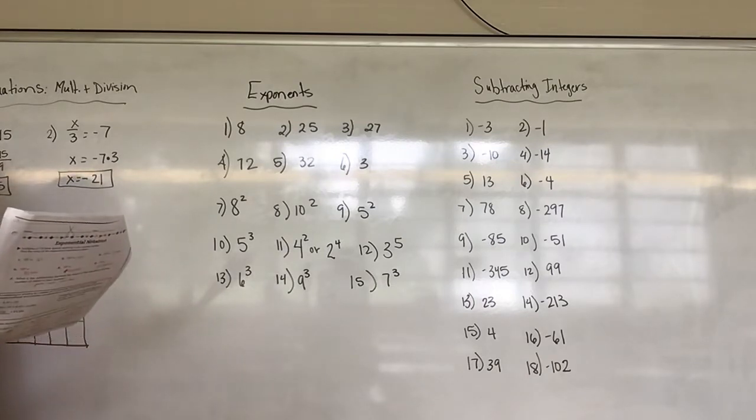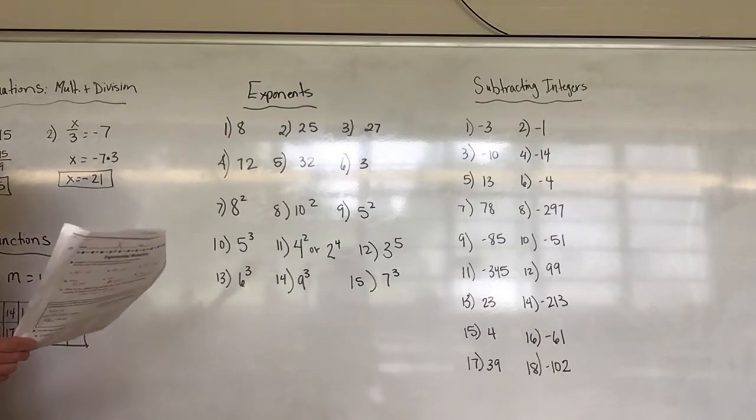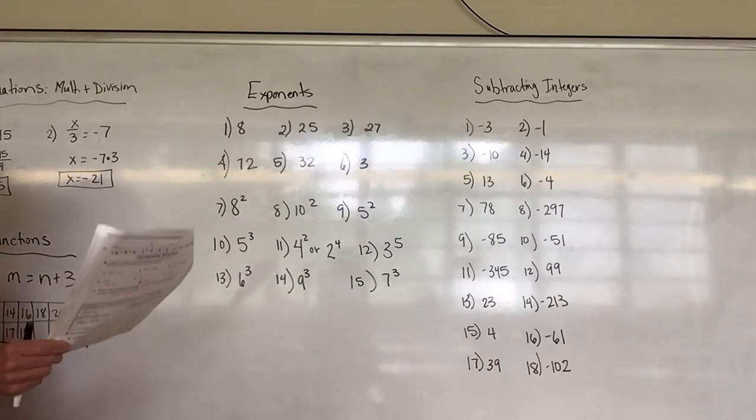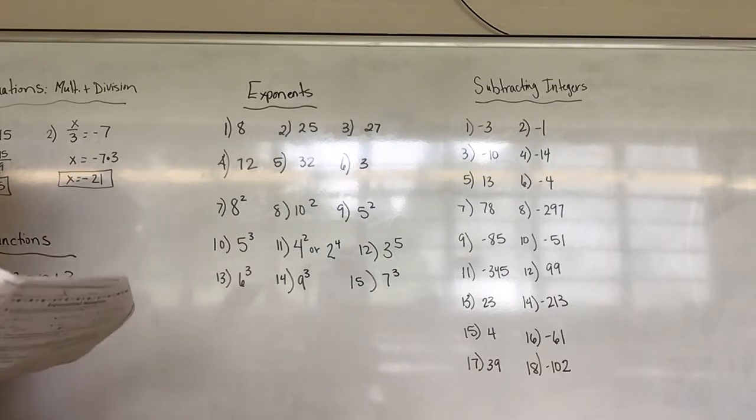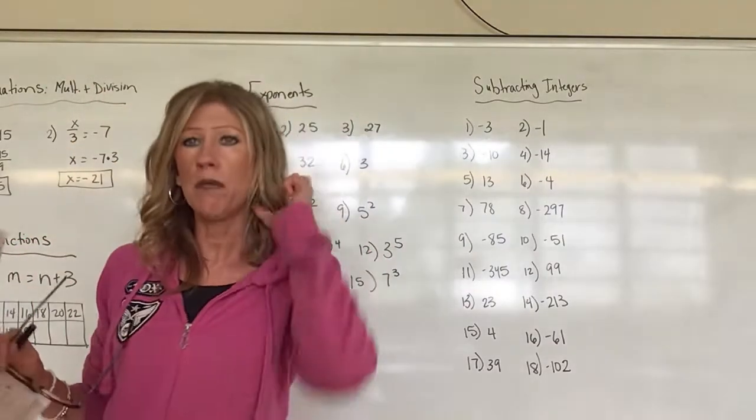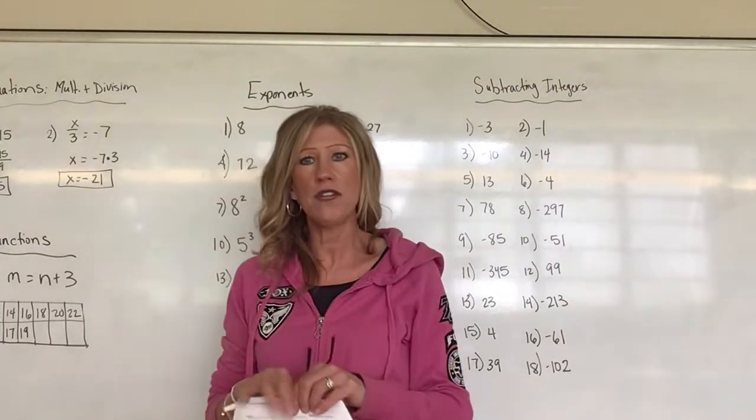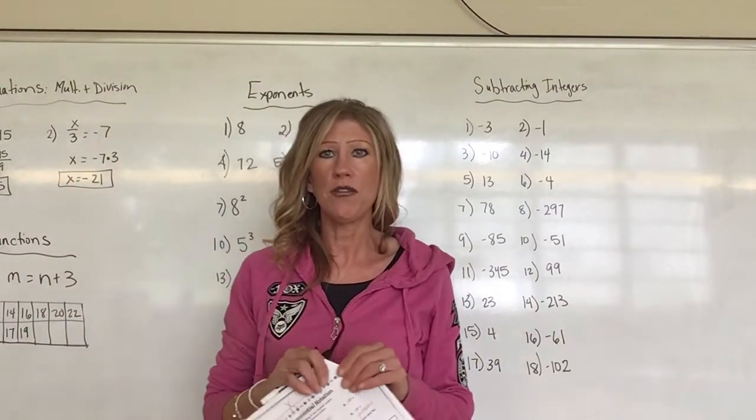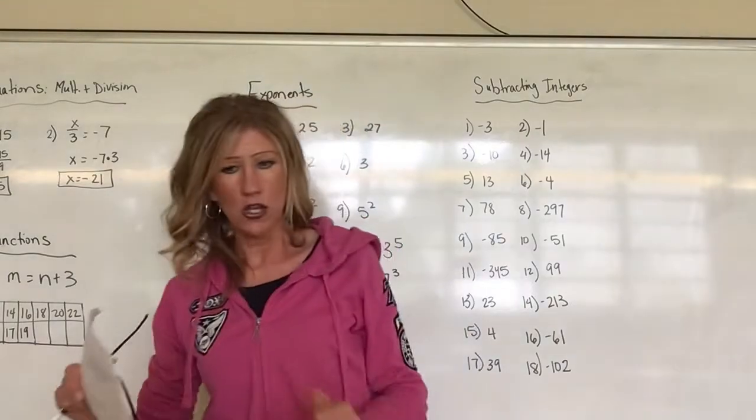Number 15 is 4, number 16 is negative 61, number 17 is 39, and number 18 is negative 102. Okay, so see how you did on that. Now you're going to be showing me this on math check-in on Thursday, so please make sure you have this ready to go because this is what you will be showing me, this packet.